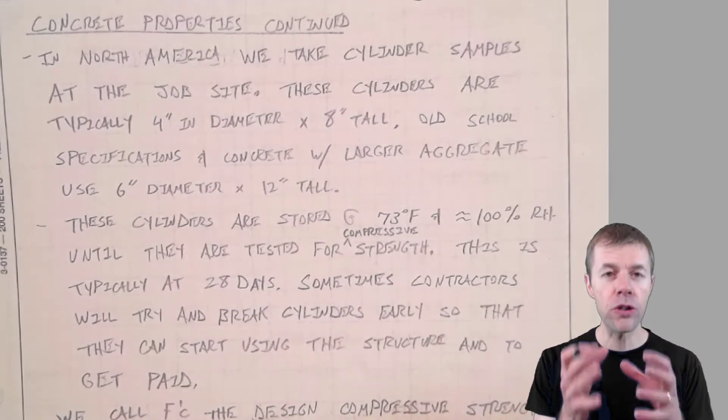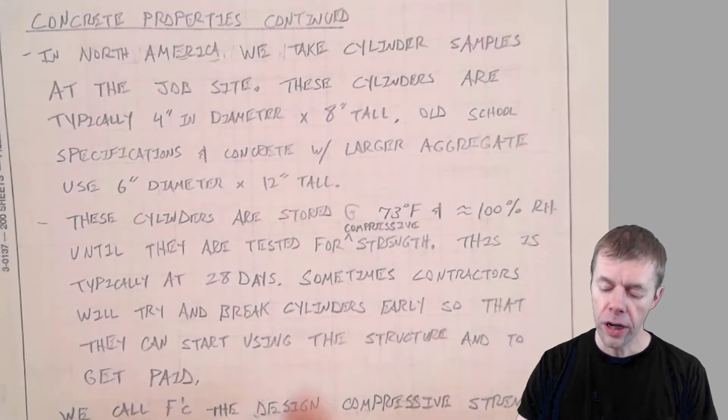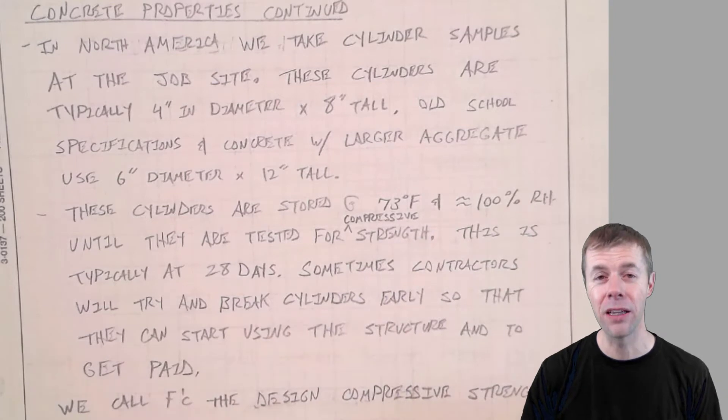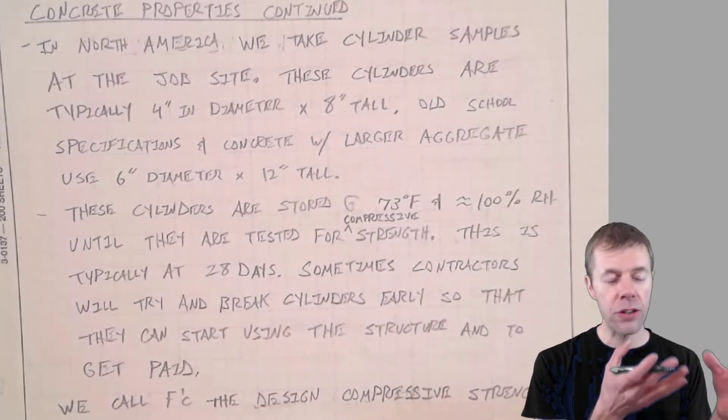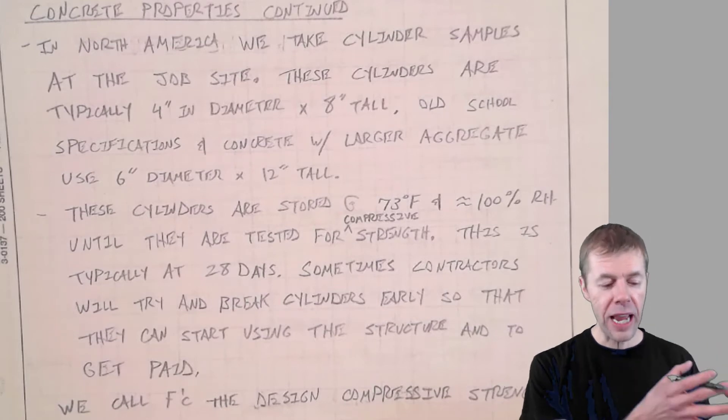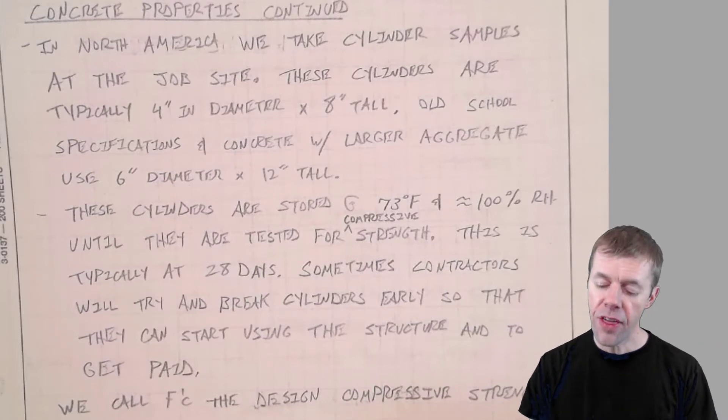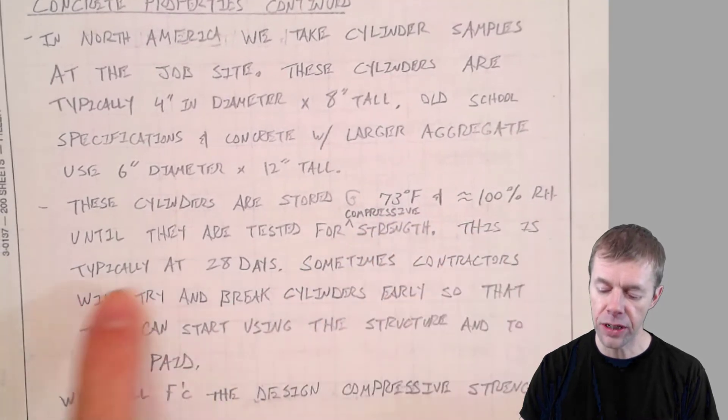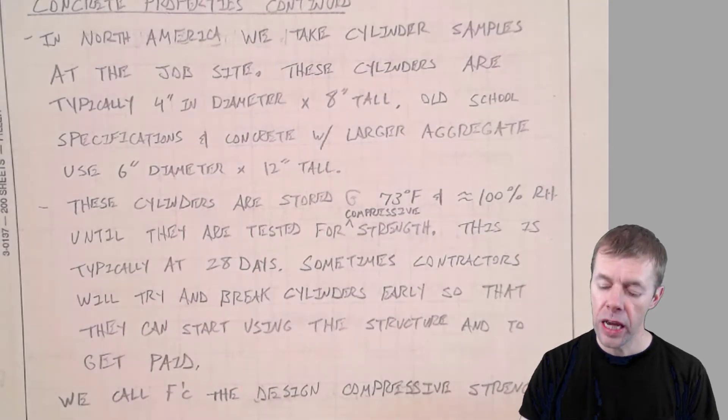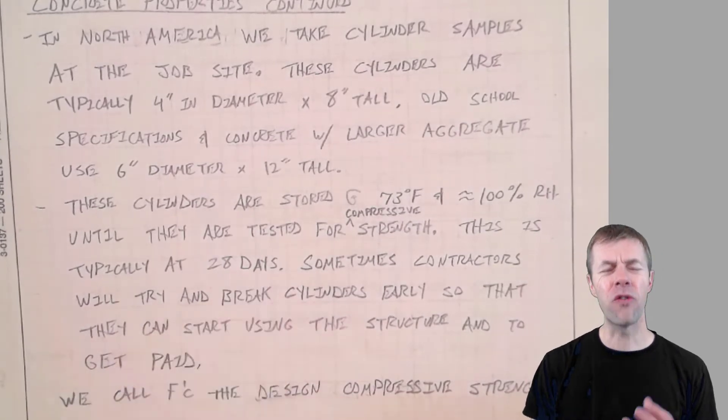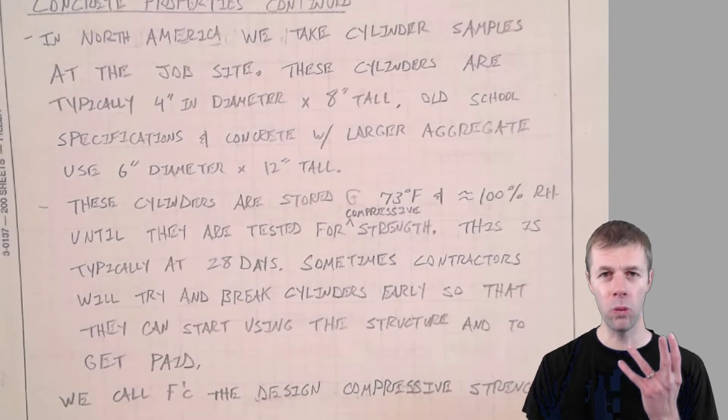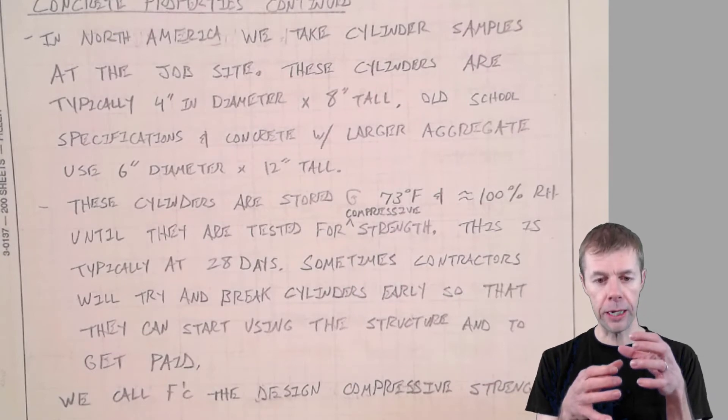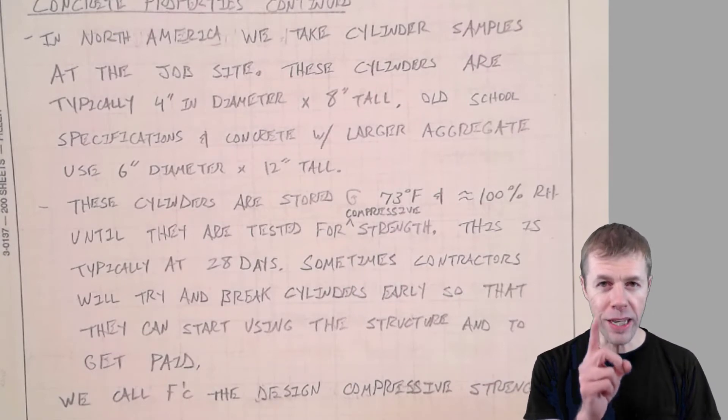So after these cylinders are made, they are stored at 73 degrees Fahrenheit and 100% relative humidity. Well, they're not stored at that the first day. They're stored in the field next to the structure for the first day. They're taken to a laboratory, and then they're stored at 73 degrees Fahrenheit and 100% relative humidity. And then they're tested for their strength. They typically do this at 28 days. And you might say to yourself, why are we doing this?